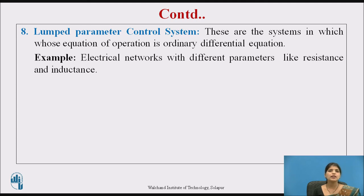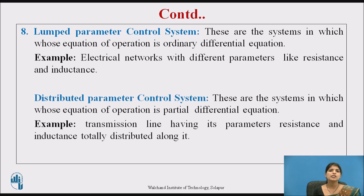Now we will see lumped-parameter and distributed-parameter systems. Lumped-parameter systems are those whose equations of operation are ordinary differential equations. For example, in electrical networks, we use differential equations with parameters like resistance and inductance. Distributed-parameter systems are those whose equations of operation are partial differential equations. For example, in a transmission line, parameters like resistance and inductance are totally distributed along it. In short, lumped parameters are based on ordinary differential equations and distributed parameters are based on partial differential equations.